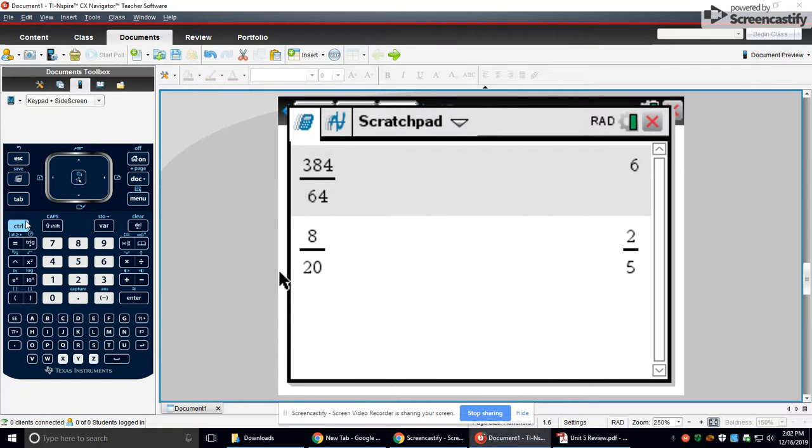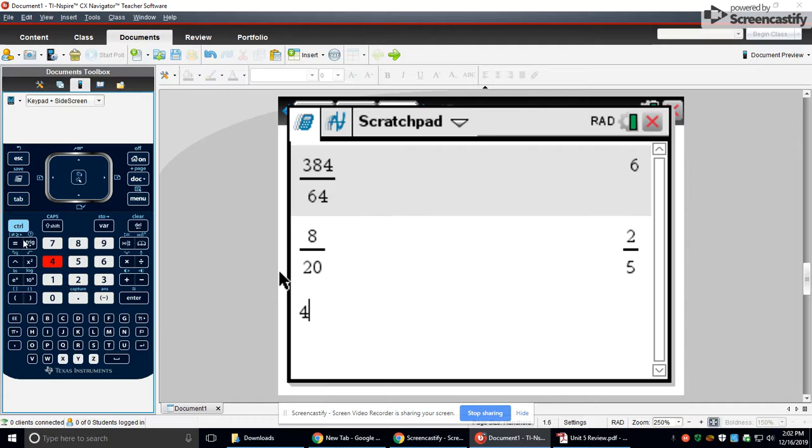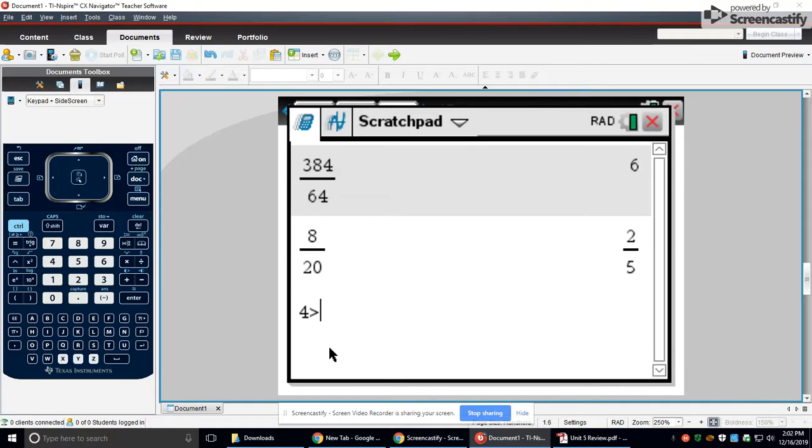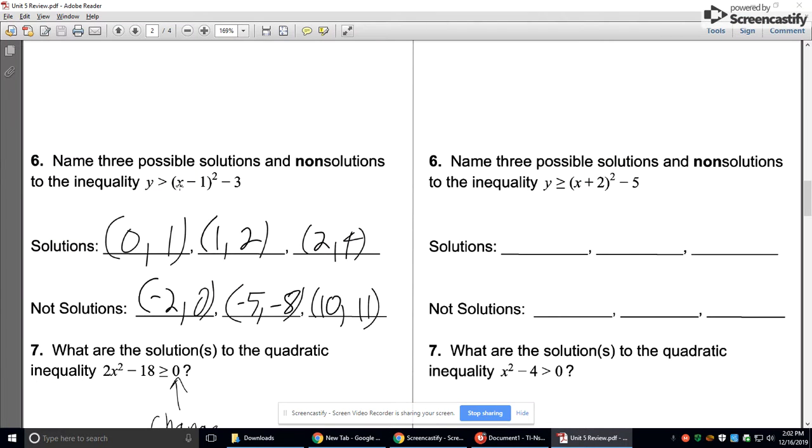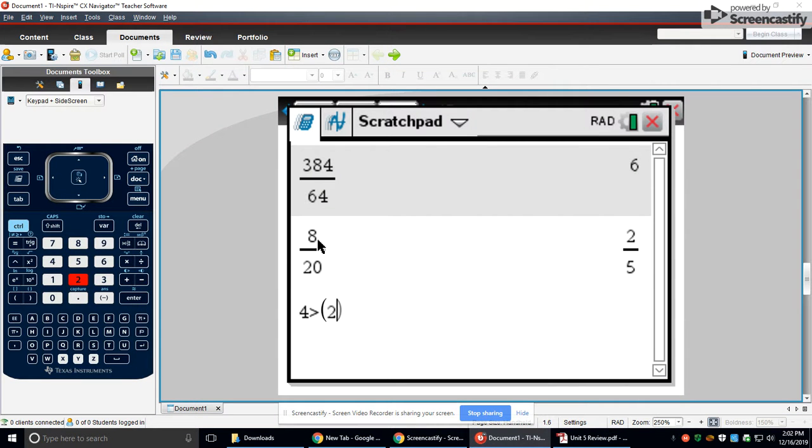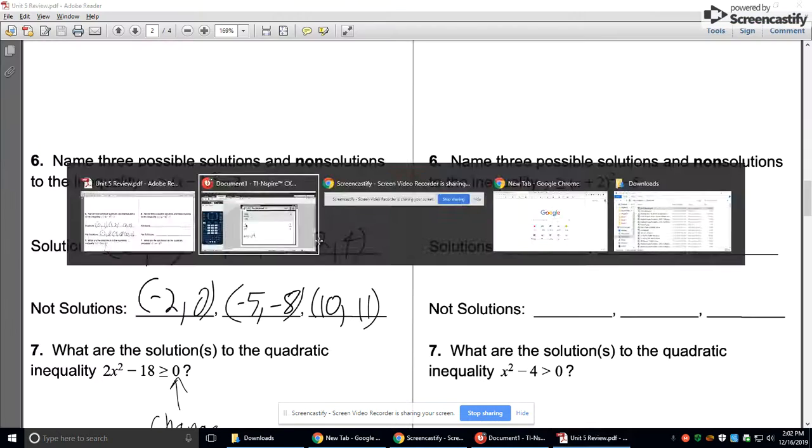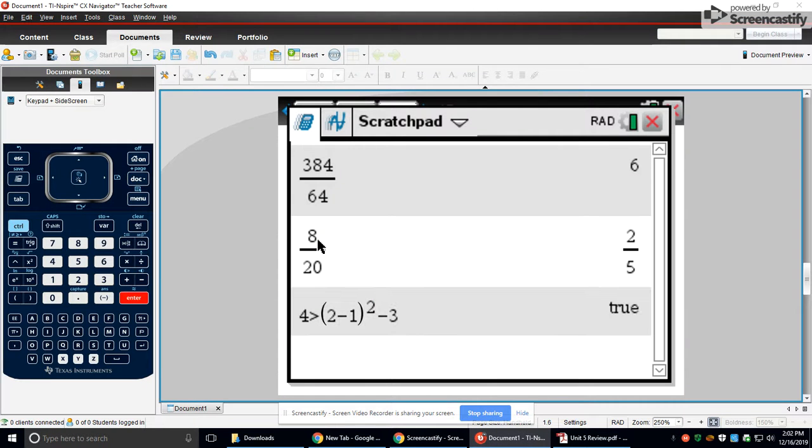So it says y is greater than, and I'll plug in 2 for x and 4 for y. Control equals gets me my inequality signs. So 4 is greater than, then I have x minus 1 squared, and I'll replace x with 2. So 2 minus 1 squared minus 3. That's a true statement.